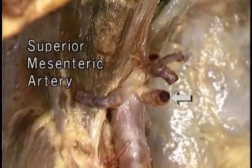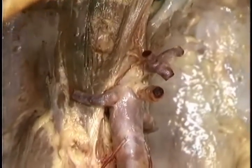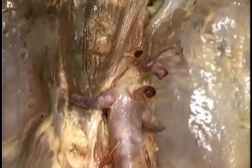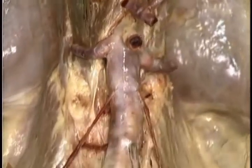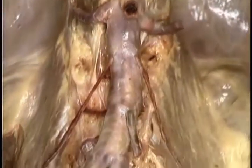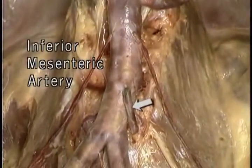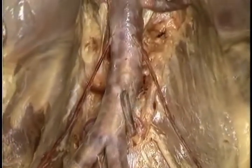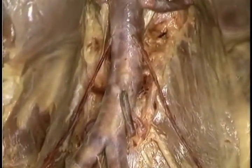The superior mesenteric artery arises at the level of L1. Its branches supply the small intestine and much of the large intestine. The inferior mesenteric artery arises at the level of L3. Its branches supply the distal part of the large intestine.